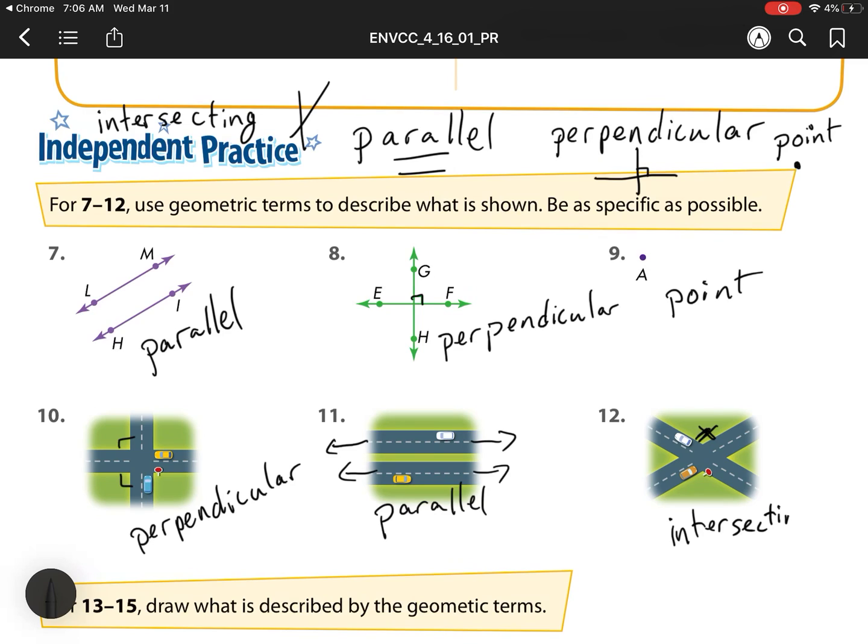Now there is something we left off on all of these. These should all say lines. These are parallel lines, perpendicular lines. We don't have a point line, so that one's going to stay the same. But the rest of them are all lines.